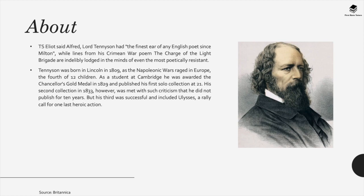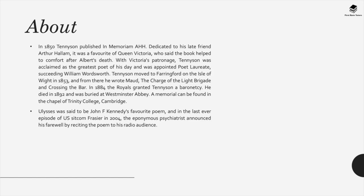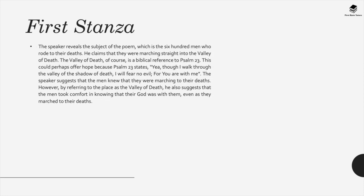The poem depicts the men who died in battle during the Crimean War — a war in the 1800s between Britain and the Russians. In the first stanza, the speaker reveals the subject: the 600 men who rode to their deaths, marching straight into 'the valley of death.' The mention of the valley of death is a biblical reference to Psalm 23, which states: 'Yea, I walk through the valley in the shadow of death, I will fear no evil, for you are with me' — suggesting God accompanies them even in death.